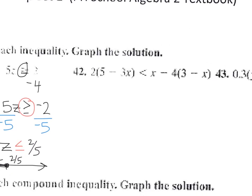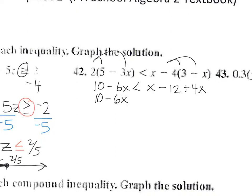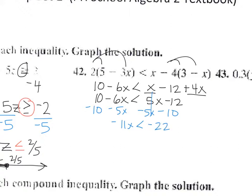Number 42: I'm going to simplify everything using the distributive property first. So it's 10 minus 6x less than x minus 12 plus 4x, which simplifies to 10 minus 6x less than 5x minus 12. Getting numbers on one side and x's on the other gives negative 11x less than negative 22. Dividing both sides by negative 11 gives x greater than 2, so there's an open dot at 2 shaded to the right.